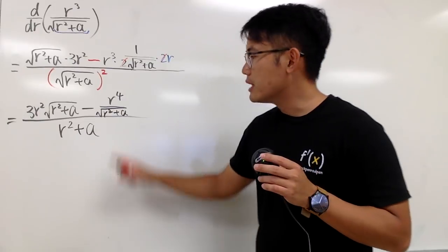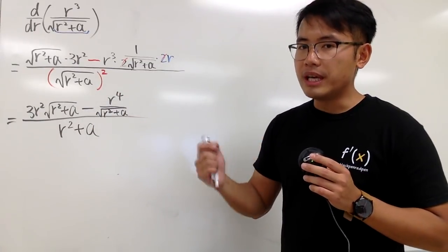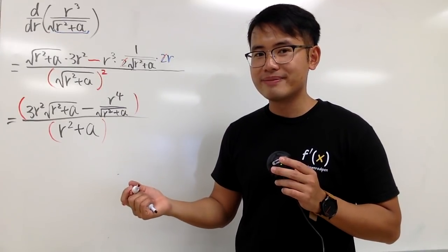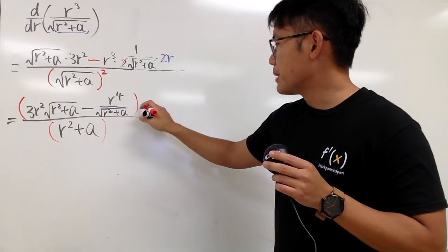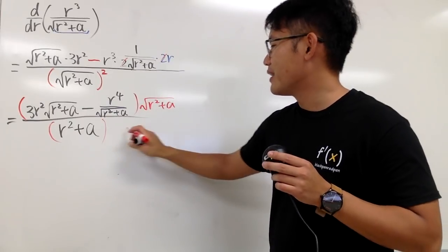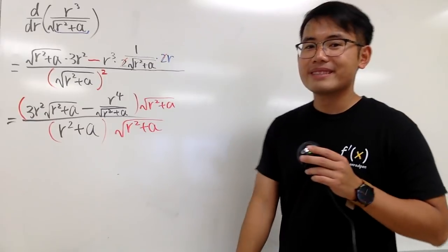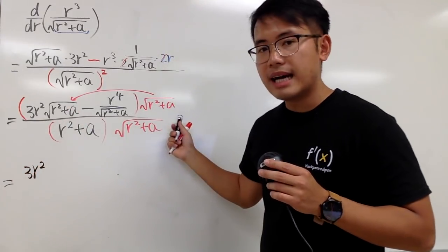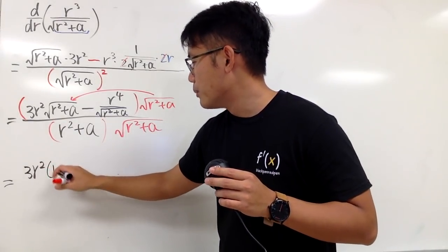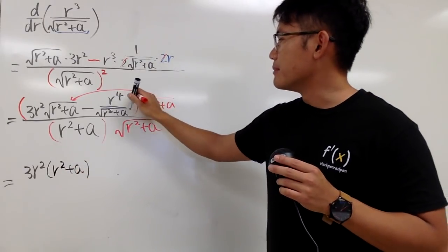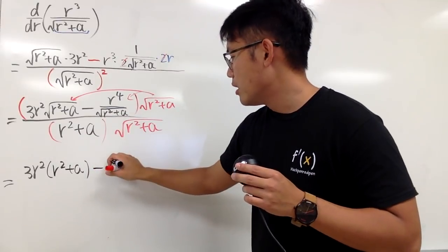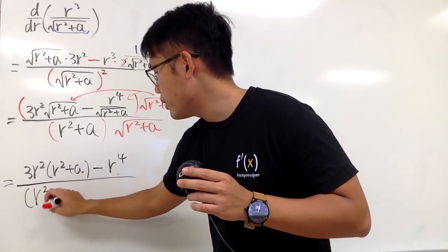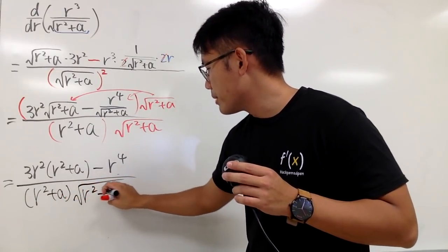We see that we have a complex fraction. The way to handle this is to multiply the top and bottom by the least common denominator of the small fractions. Since the only small fraction we have is square root of r squared plus a, we multiply top and bottom by square root of r squared plus a. Distributing: we first get 3r squared — this times that, the insides are the same, so we just get r squared plus a. Then this times that cancels, leaving minus r to the 4th power. The denominator becomes r squared plus a times square root of r squared plus a.